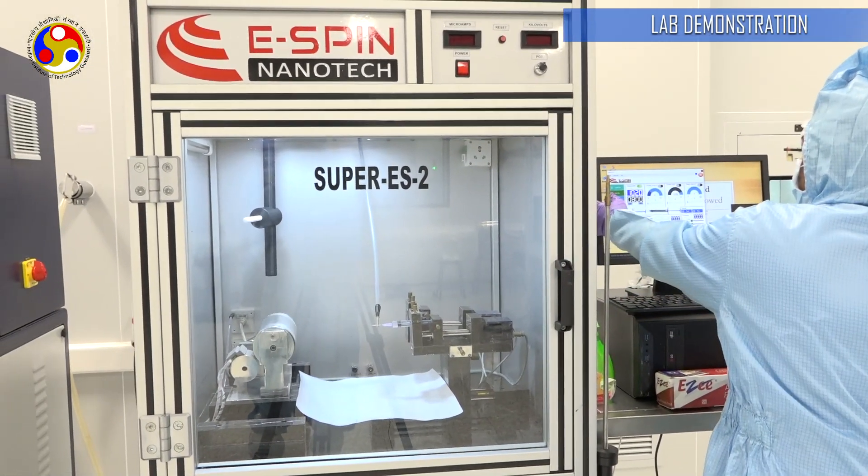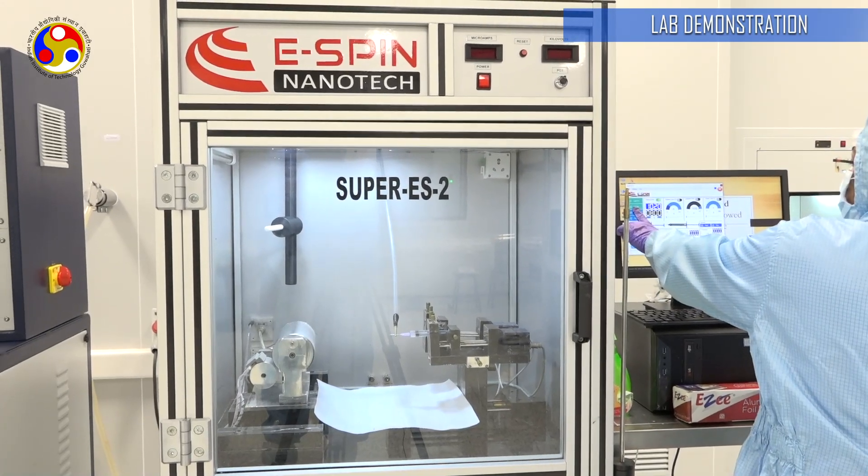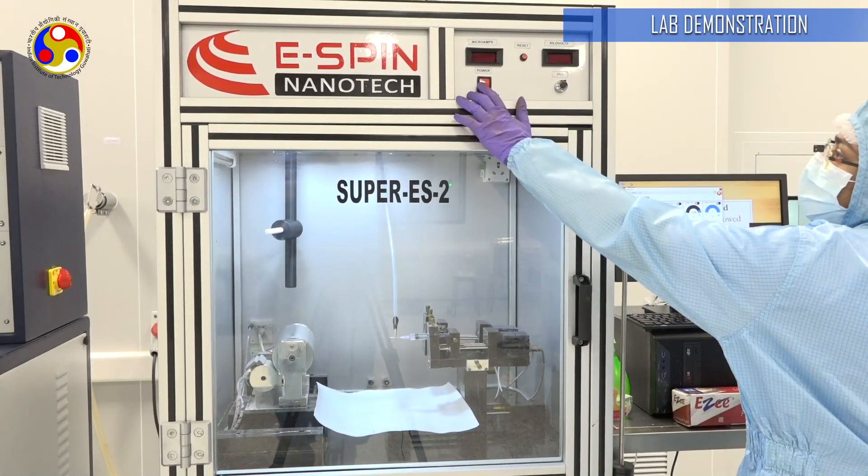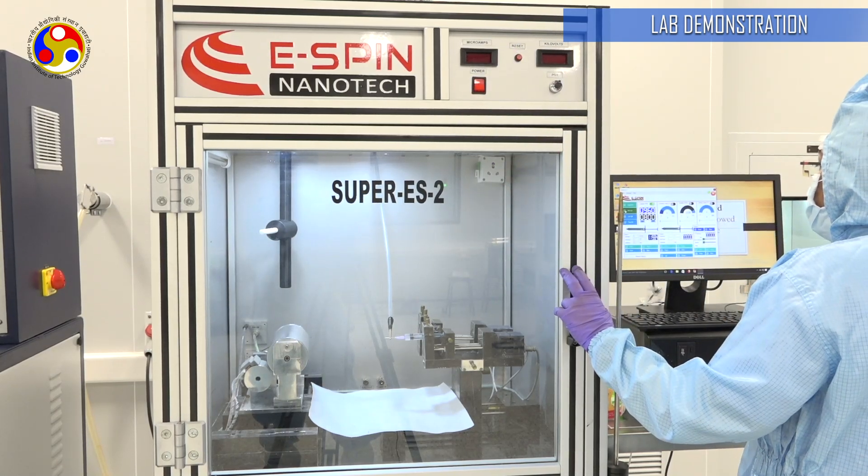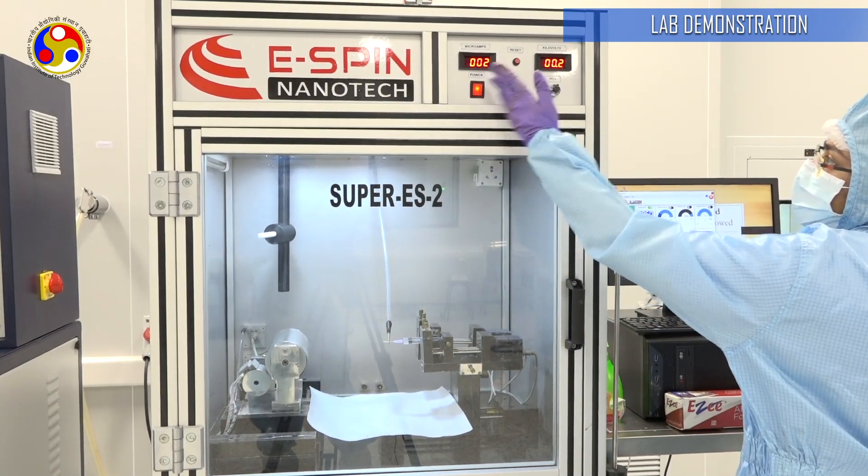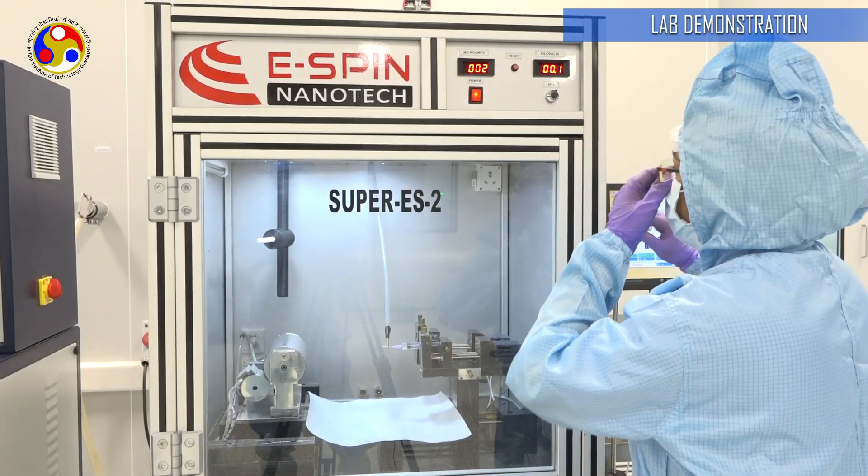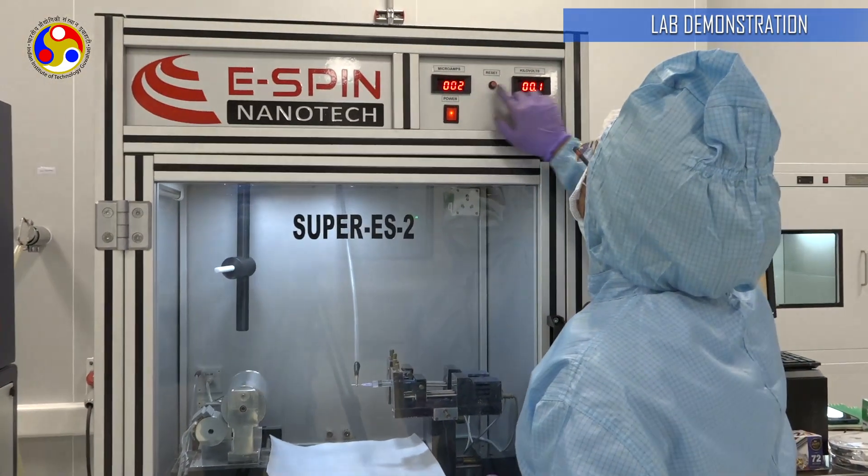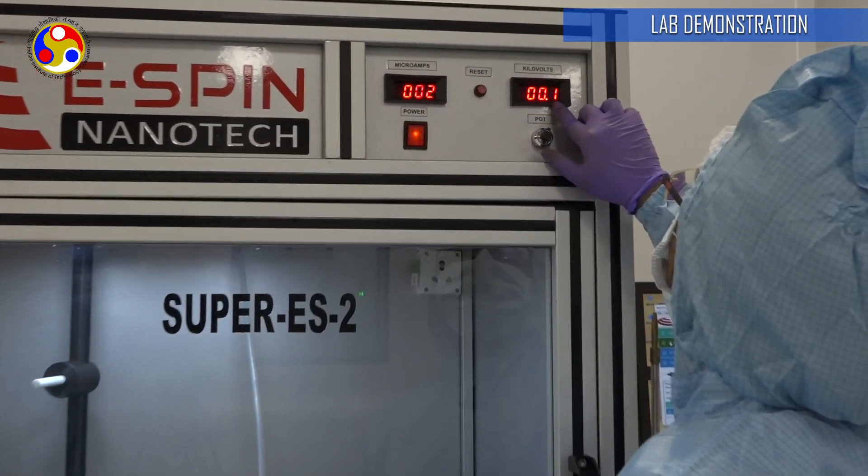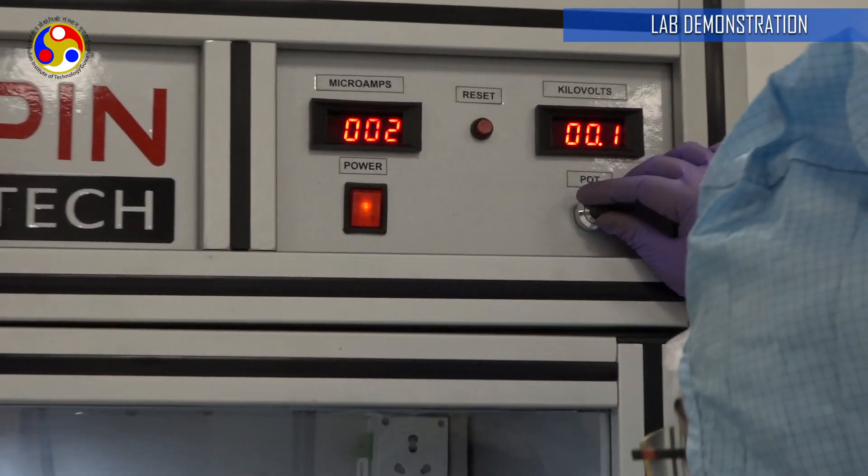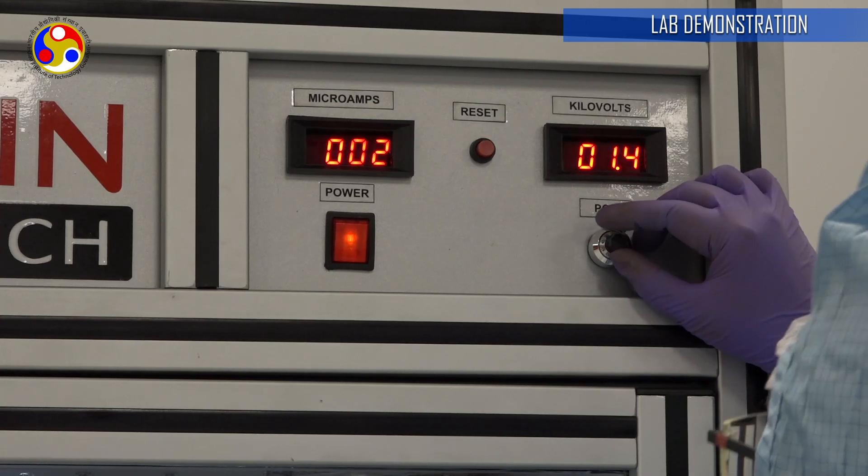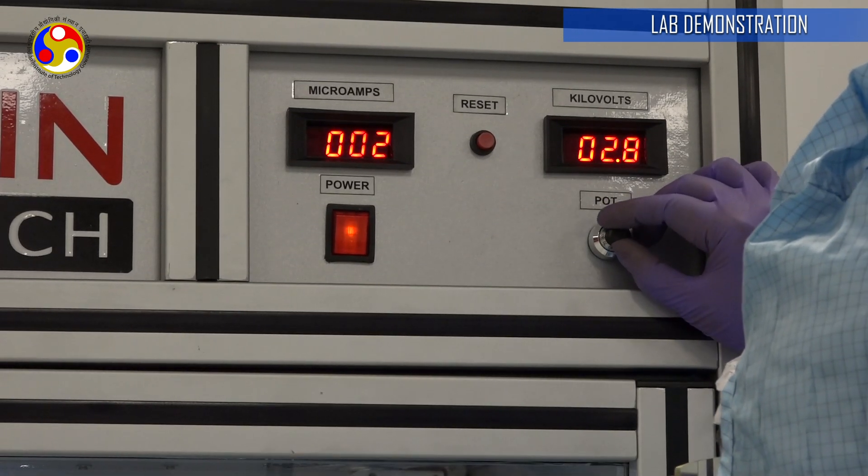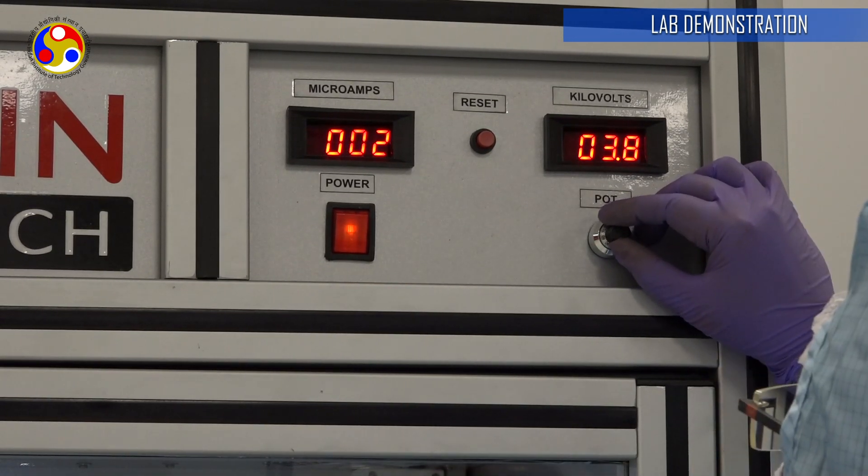I am going to turn it off again and show you what happens. Since the HV is off, this switch won't work. Nothing is showing here, but now that I am turned HV on, the power comes on. It's at 0.1 kilovolts. I am going to start slowly increasing, very slowly, till my desired value is reached.